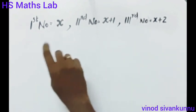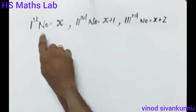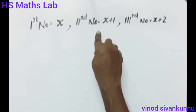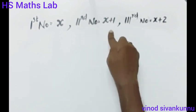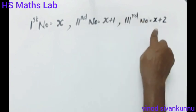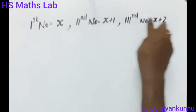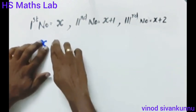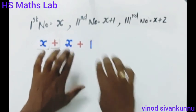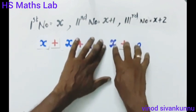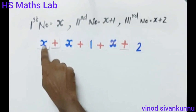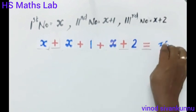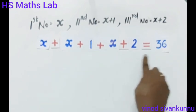Let x be the first natural number, x plus 1 be the second natural number, and x plus 2 be the third natural number. So our equation is: x plus (x plus 1) plus (x plus 2) equals 36.